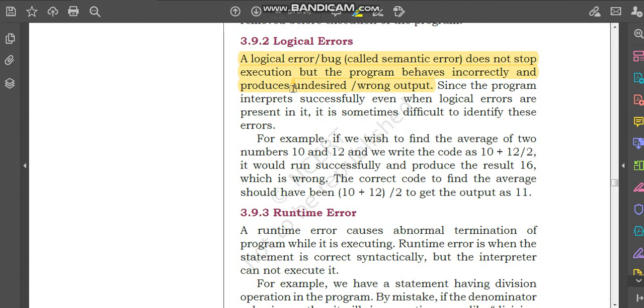For example, if we wish to find the average of two numbers 10 and 12, and we write the code 10 + 12 / 2, it would run successfully but produce the result 16, which is wrong. The correct logic should be (10 + 12) / 2, which will give the right output as 11. This is an example of logical error.